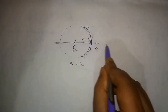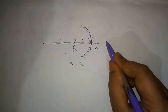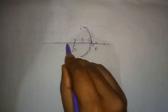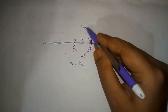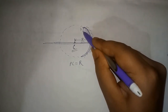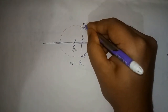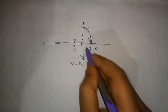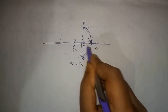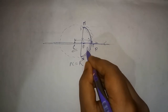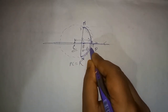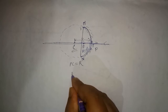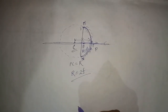The line passing through the center of curvature and the pole is called the principal axis. The principal axis is normal, that is, perpendicular to the mirror at its pole. The diameter of the reflecting surface of the spherical mirror is called its aperture, and the distance MN represents the aperture. F is a point called the focus. The distance between the pole and the focus is called the focal length. Its relation with the radius of curvature is R equals 2f.